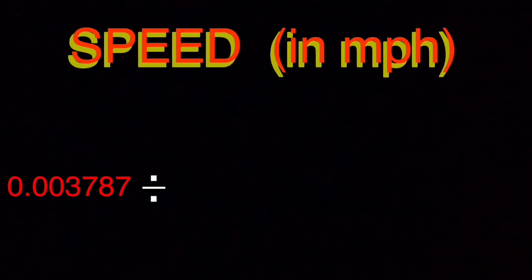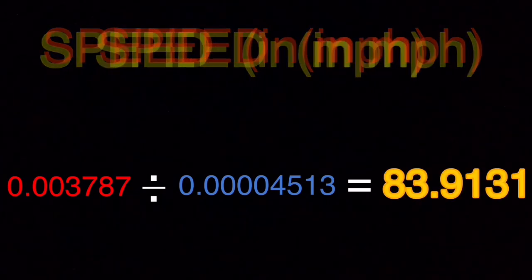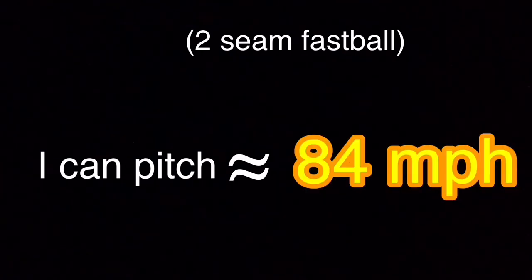So now to figure out the speed you're throwing the ball. First, you take the distance in miles that you're throwing the ball, that was 0.003787, and you divide that by the hours you're throwing the ball. The time in hours is 0.00004513. Your answer should be 83.9131. I rounded 83.9131 to the nearest number and I got 84 miles per hour. So I can pitch 84 miles per hour.